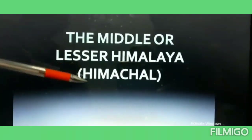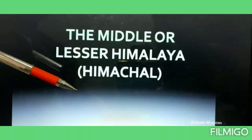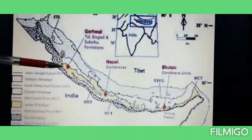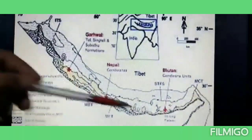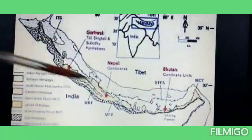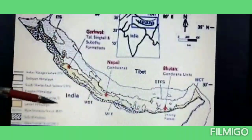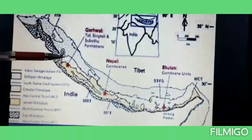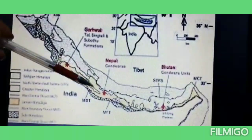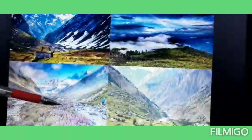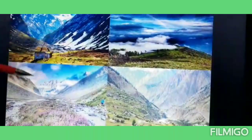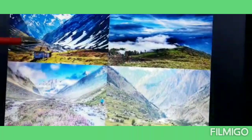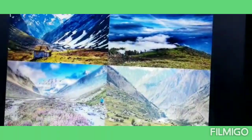The middle or lesser Himalaya is called Himachal. Himachal ranges are located between Himadri and Shivalik. The Himachal is lower than Himadri. The mountain range has some beautiful valleys such as Chamba, Kulu and Kangra. The famous hill stations of Shimla, Mussoorie, Nainital and Darjeeling are located in this range.